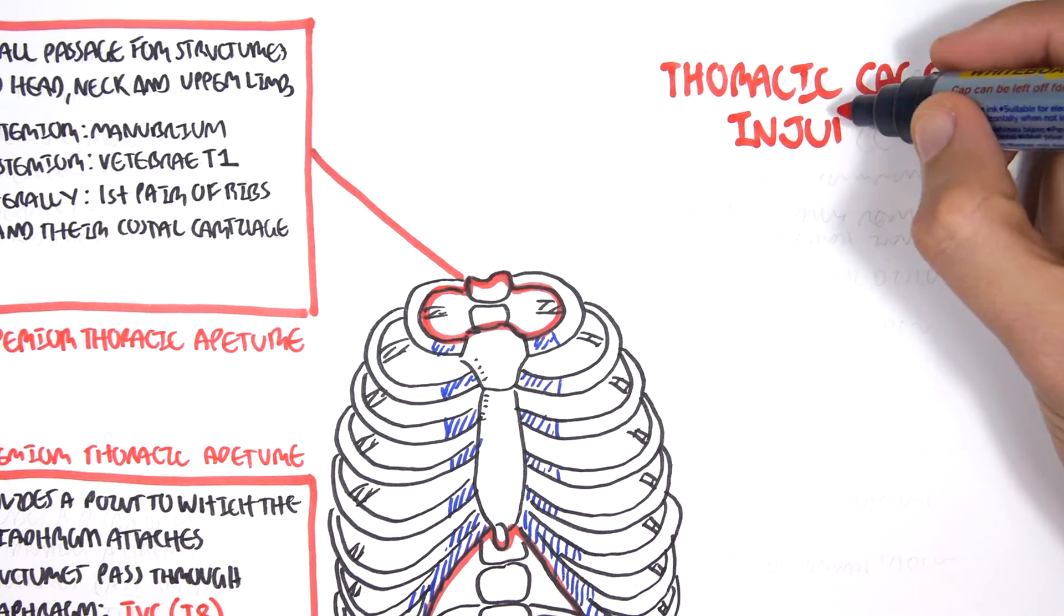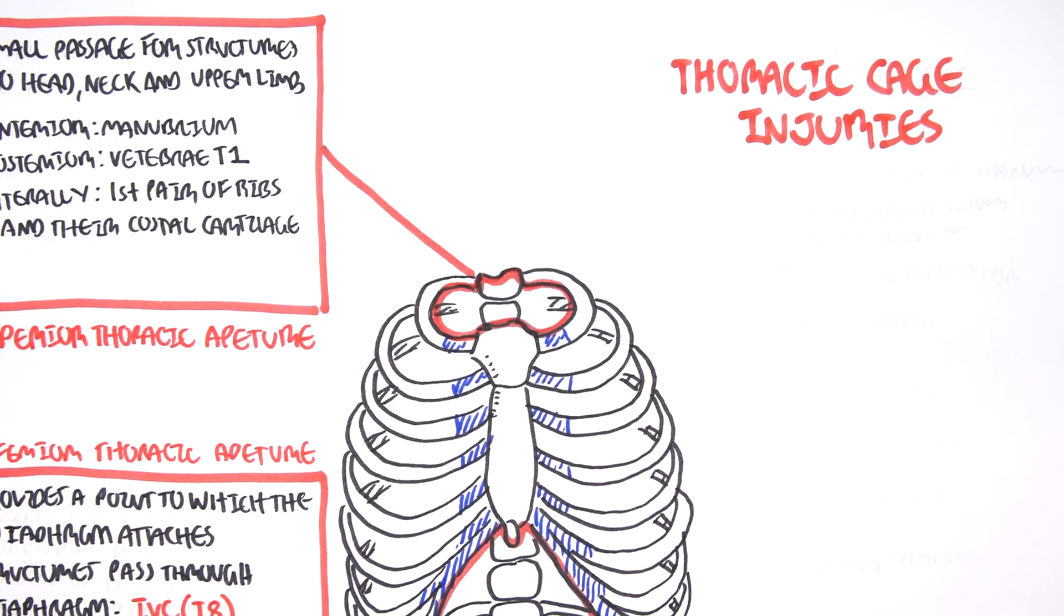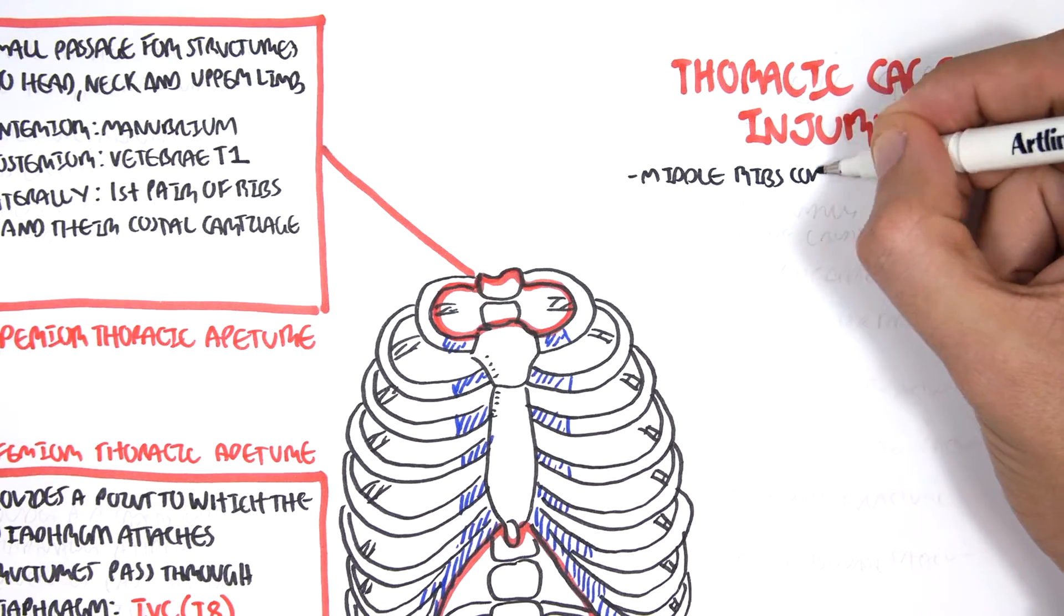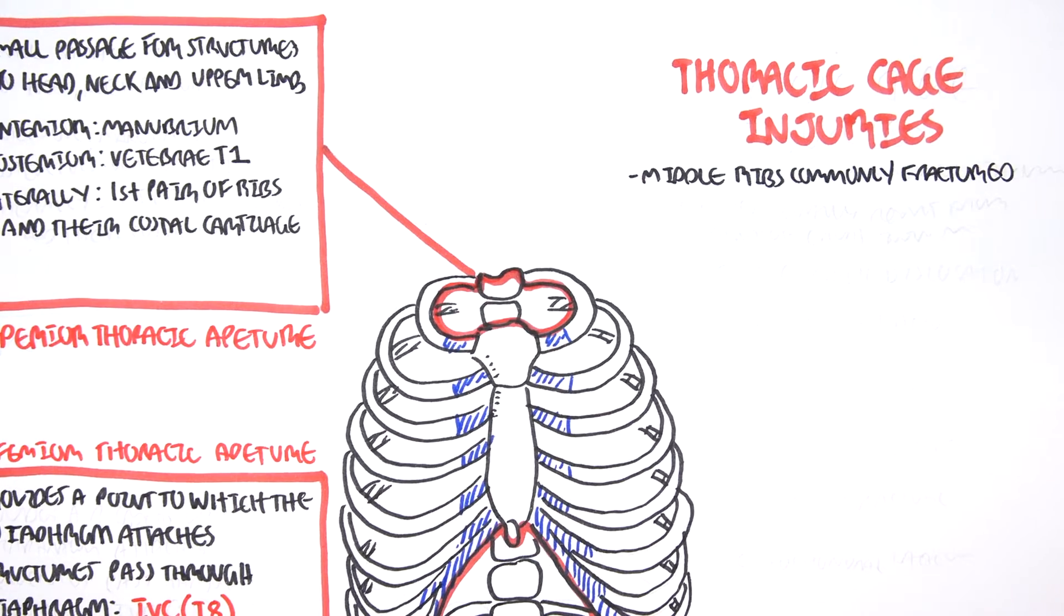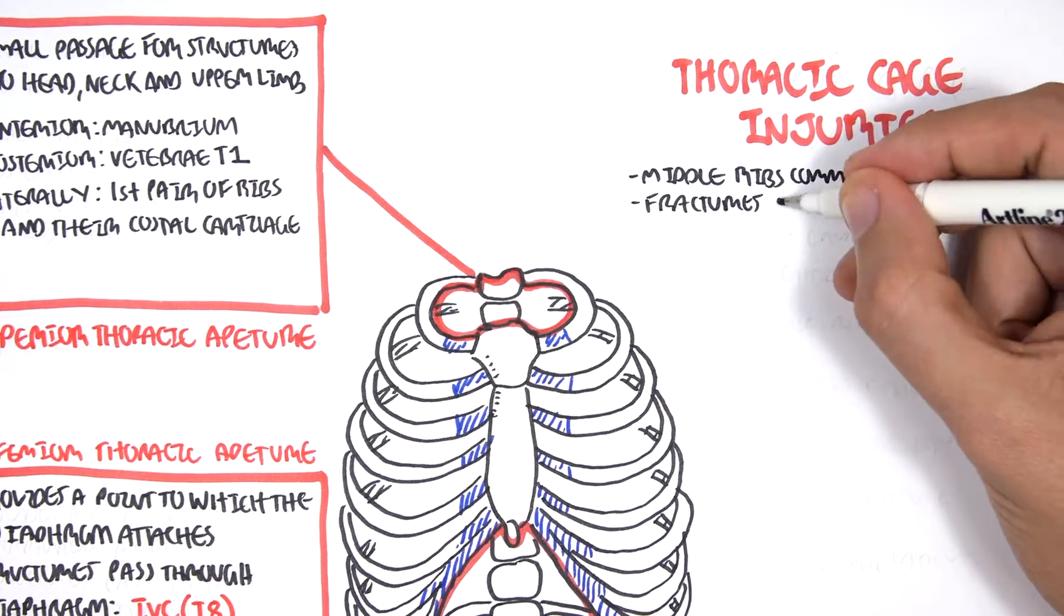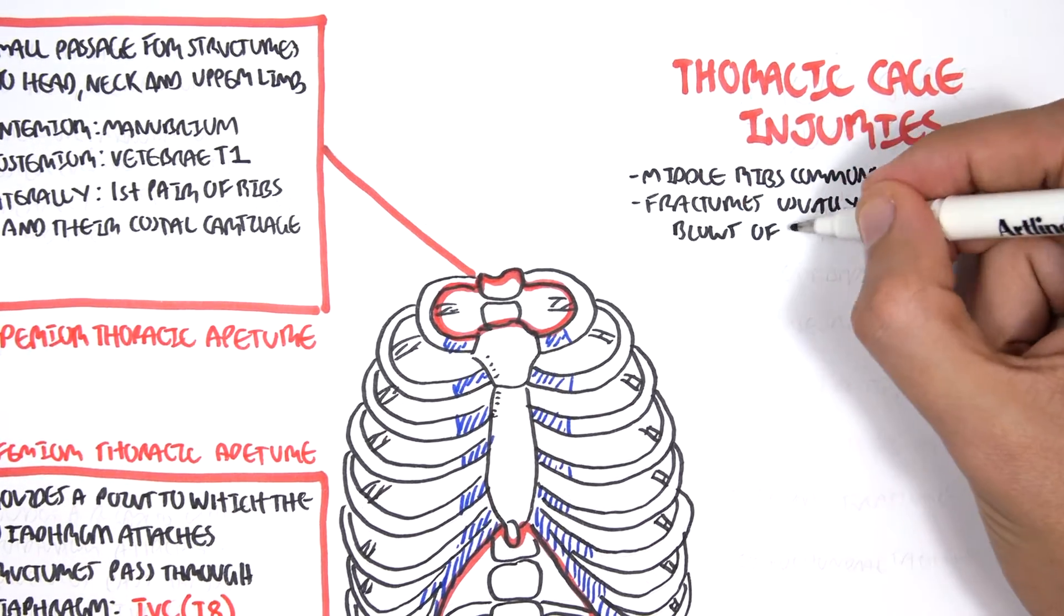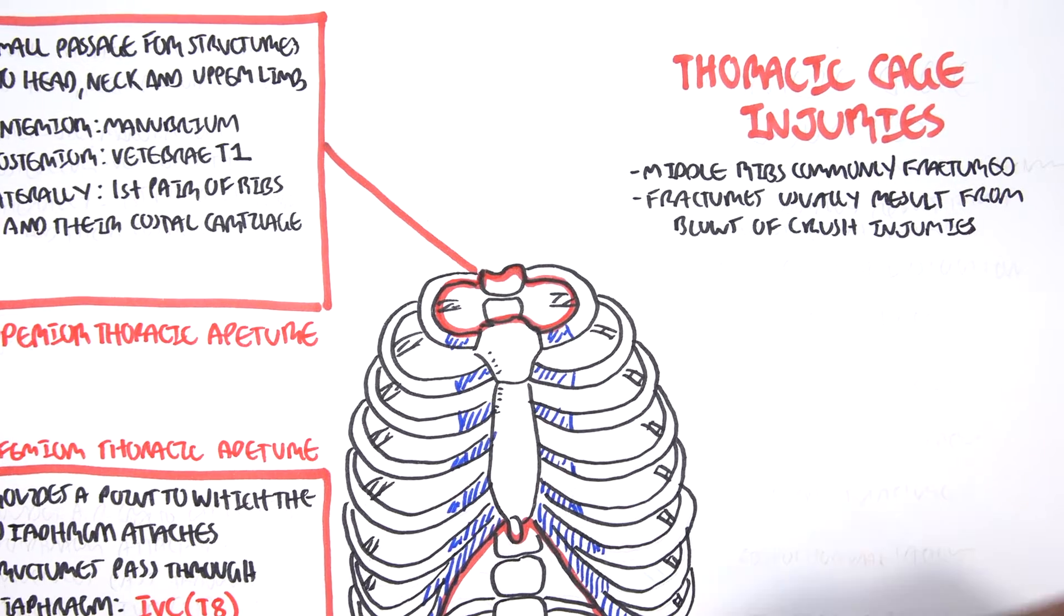Now let's look at thoracic cage injuries. The middle ribs are commonly fractured. Fractures usually result from blows or crushed injuries. So let's look at some types of fractures.